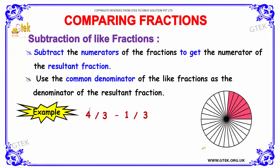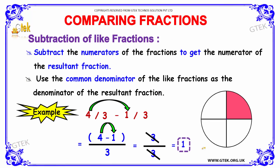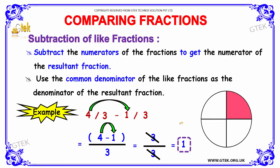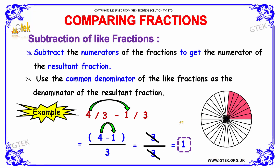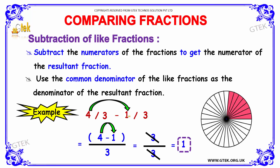Now we move to subtraction of like fractions. In subtraction of like fractions, the first point is that we need to subtract the numerators of the fractions. Here, 4 and 1 are the numerators of the resultant fraction.